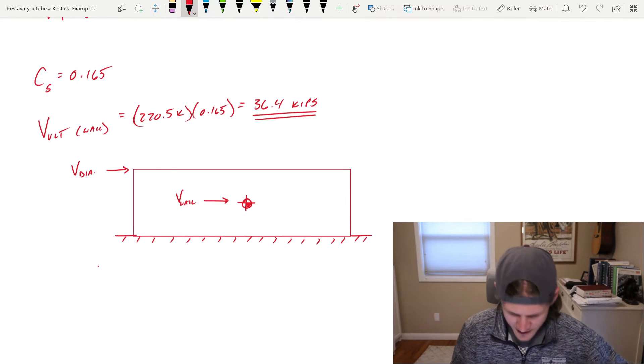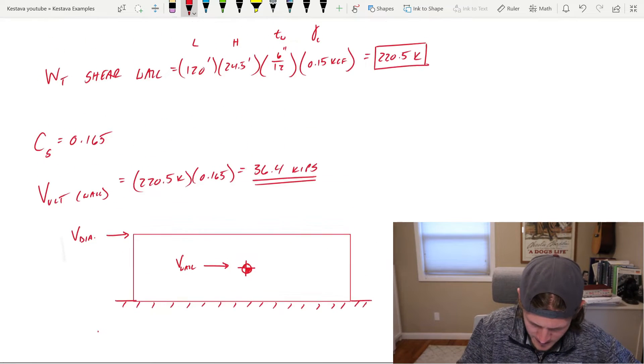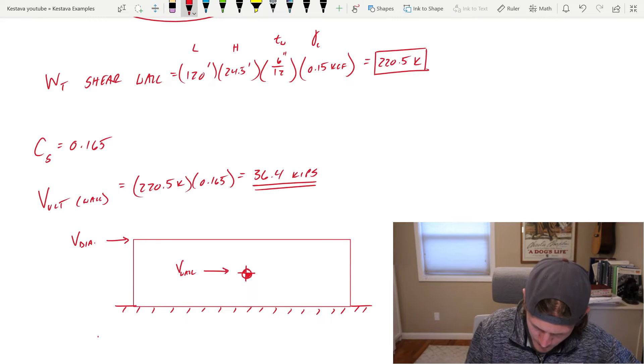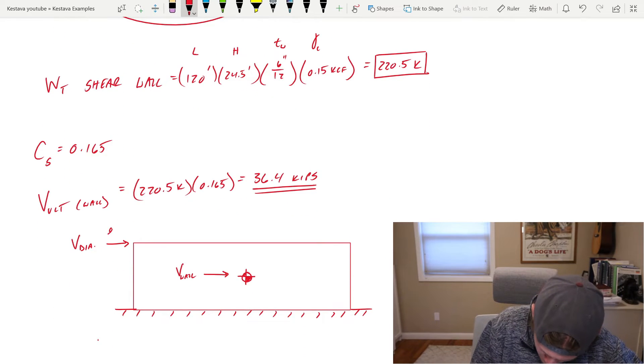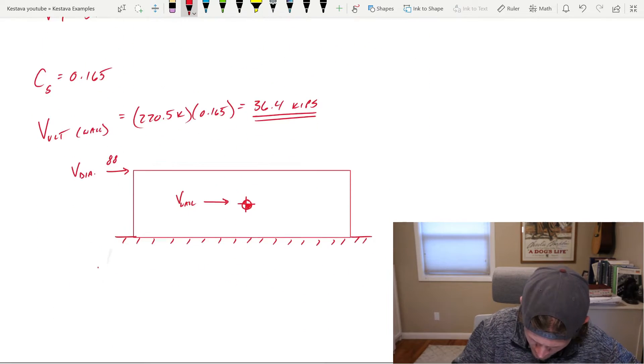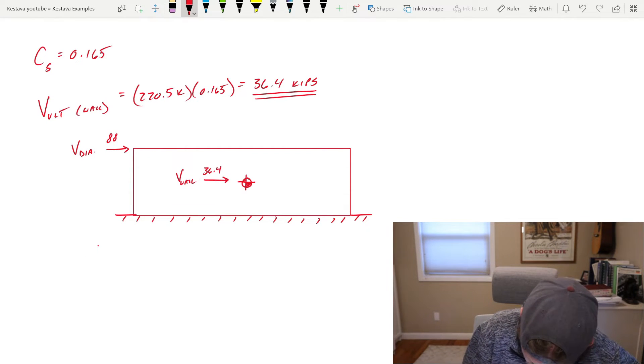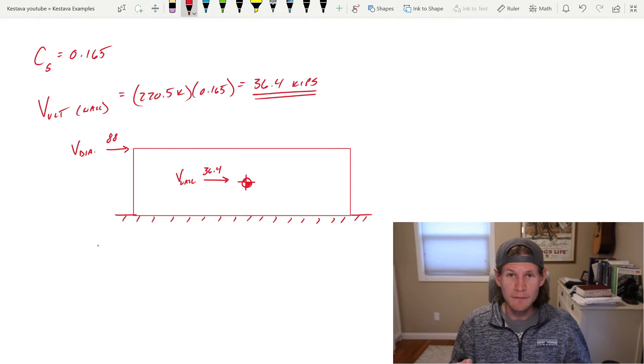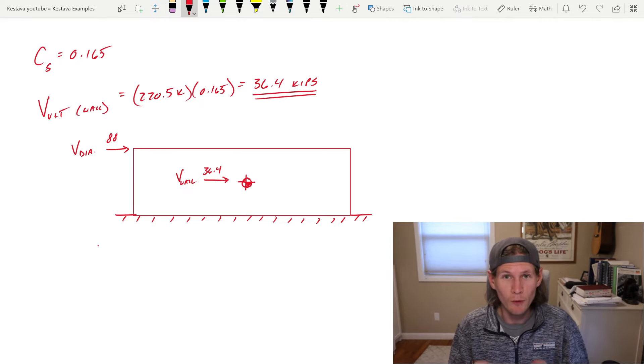And so what's happening here is we have our Vultimate from the diaphragm. So I've now redefined it as Vdia. That was what we solved for above of 88 kips. So I'm just going to do 88 right here. And then we just solved for V wall, which is 36.4 kips, which is acting at the midpoint of the wall.